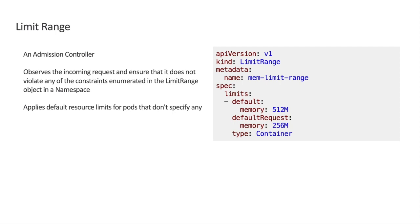Now let's discuss limit range, which is an admission controller — a piece of code that intercepts requests to the Kubernetes API server prior to persistence of the object. It either validates the request, mutates the request, or both. With resource quotas, all deployments that do not advertise resource quotas will fail. If you don't want to be that aggressive, you can use the limit range admission controller, which applies default limits to pods that do not specify any. For example, any pod with no memory resource quotas advertised will be assigned 256 MB as guaranteed and can burst up to 512 MB. Limit range is loaded by default in AKS and all you have to do is configure your own policies.